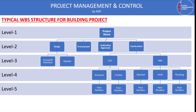On the screen you can see a typical work breakdown structure for a building project. Level zero is the project, then level two includes design, procurement, authority, and construction. At level three, design is decomposed into concept, schematic, detail, and IFC drawings. Procurement is decomposed into procurement of design engineers, procurement of supervision engineers, and procurement of different subcontractors and contractors.